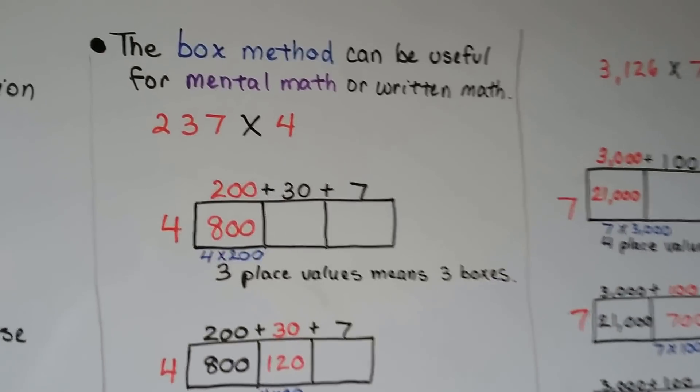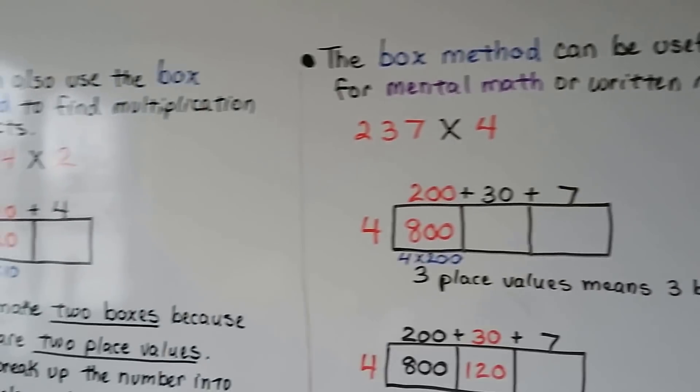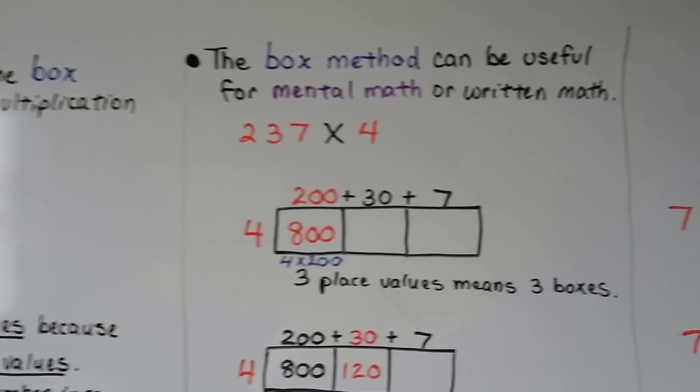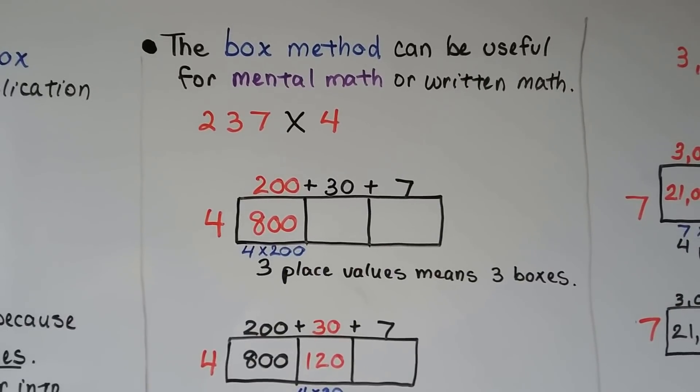The box method could be useful for mental math or written math. If you're doing two-digit numbers, that'll help you do mental math. It might be a little harder when you get to 3, 4 digits.